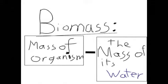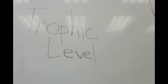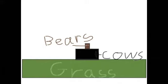Biomass is the total mass of something, minus the mass of the water. A trophic level is basically just a level of a food chain. Let's use the cow example from before, but let's replace humans with bears. We can symbolically place grass, cows, and bears on different levels.